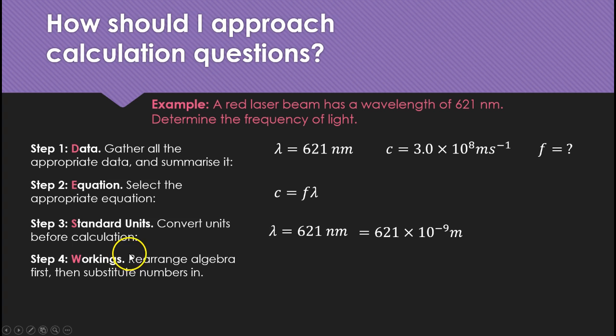Step four, the workings. Rearrange the algebra first and then substitute the numbers in. So I wouldn't put numbers in here but I would rearrange the equation to make f the subject, speed over wavelength. If you've got more complicated algebra then it really does pay to rearrange the letters first before you put in the numbers. Then you put in the numbers and I'd write them out on my workings as I put in like this.